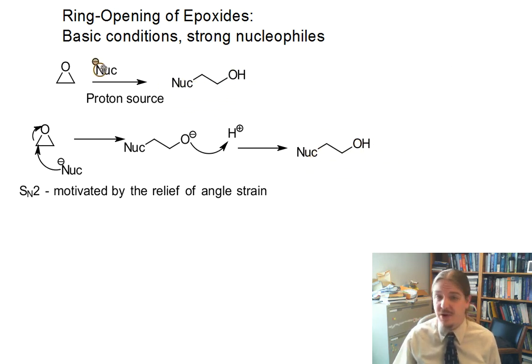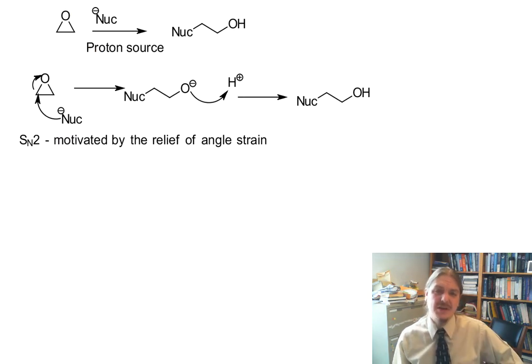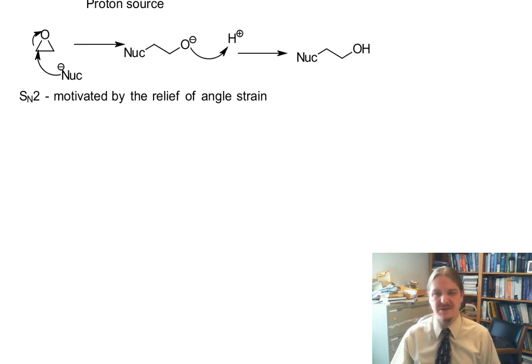It depends upon the identity of the nucleophile whether the proton source is in the reaction. Some nucleophiles will be able to use their conjugate acid as part of the reaction. In some cases, we'll need to use nucleophiles that don't tolerate any protic sources, so we'll add the proton source second.